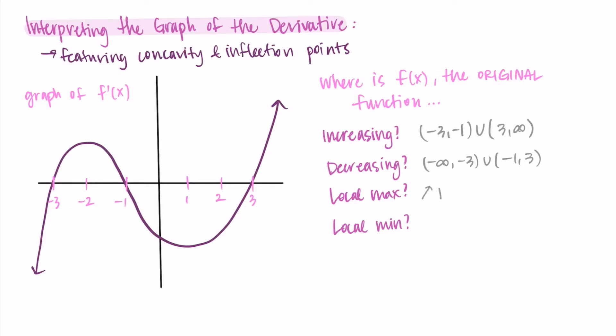We have a local maximum whenever the derivative changes from positive to negative — increasing and then decreasing. I'm seeing that happens at x equals negative 1, where we change from positive to negative, crossing from above the x-axis to below. For local min, this occurs when we change from a negative derivative to a positive derivative — from below the x-axis to above, from decreasing to increasing. I'm seeing that happens at x equals negative 3 and at x equals positive 3.